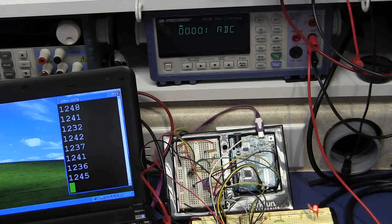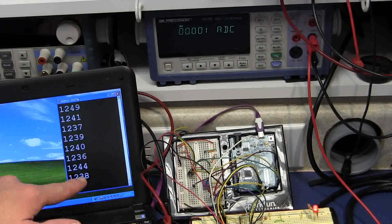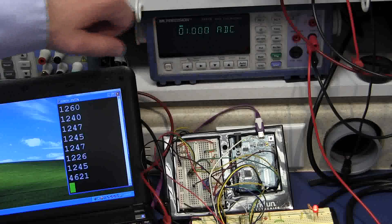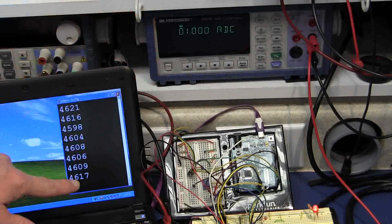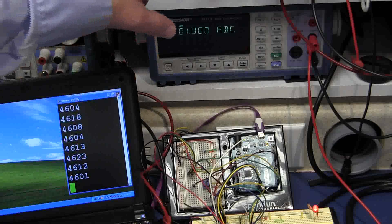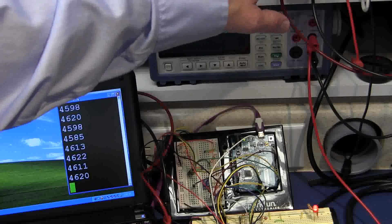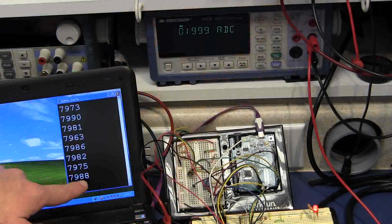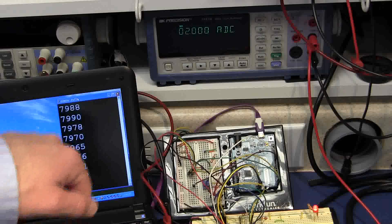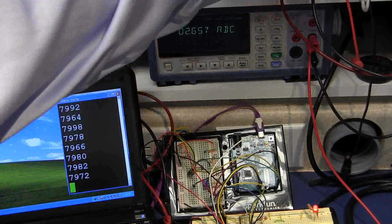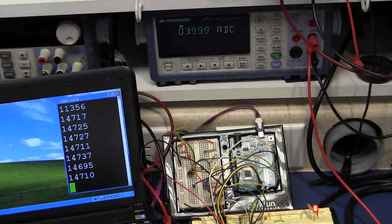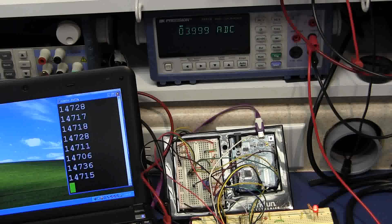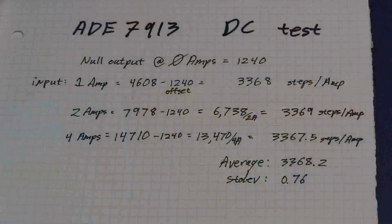So the quiescent output reading of the ADC is about 1240, plus or minus a bit. A fair bit of fluctuation in that number though. At 1 amp, we're getting 4608, 4609, 4618. Again, still quite a bit of noise. Let's try 2 amps. At 2 amps, we're getting 7980, 7988, 7970. Let's move up to about 4 amps and see what we get. 14710, up to 14720. Let's see how linear that is.